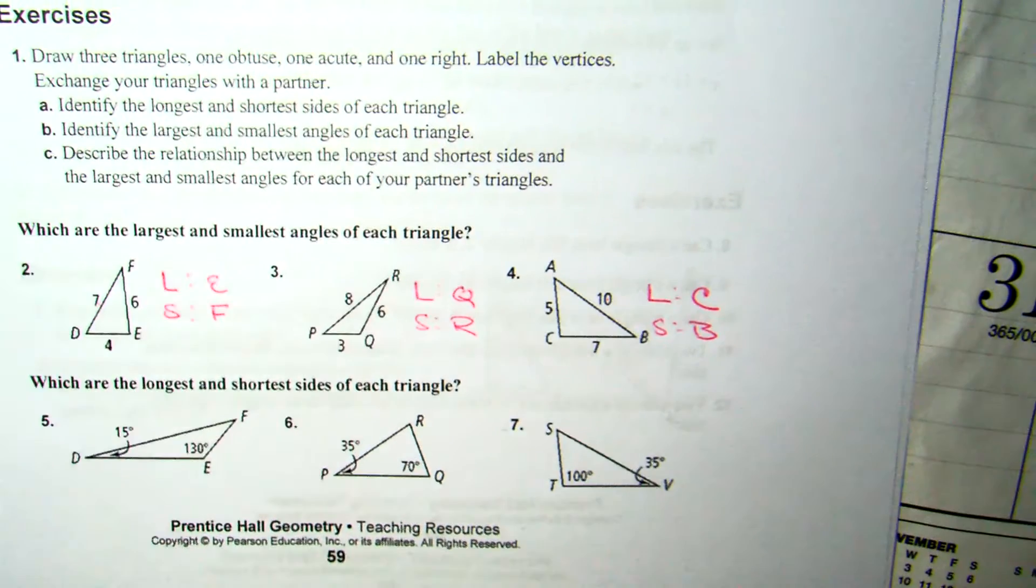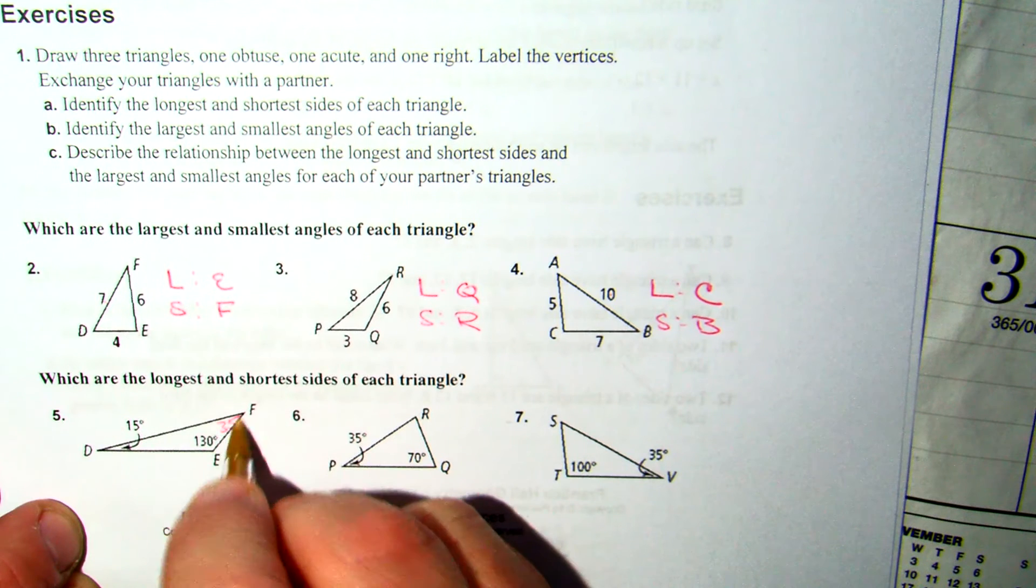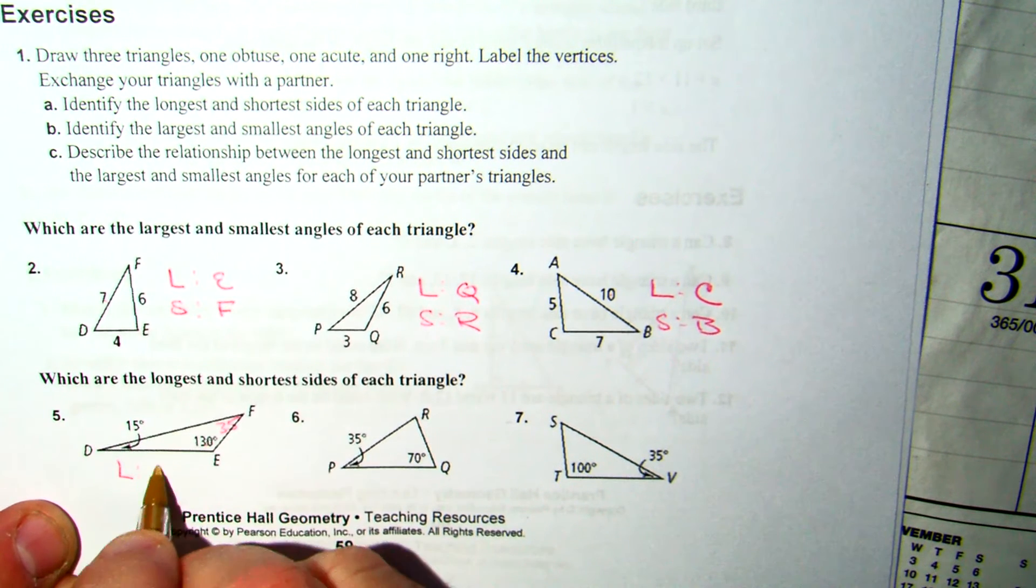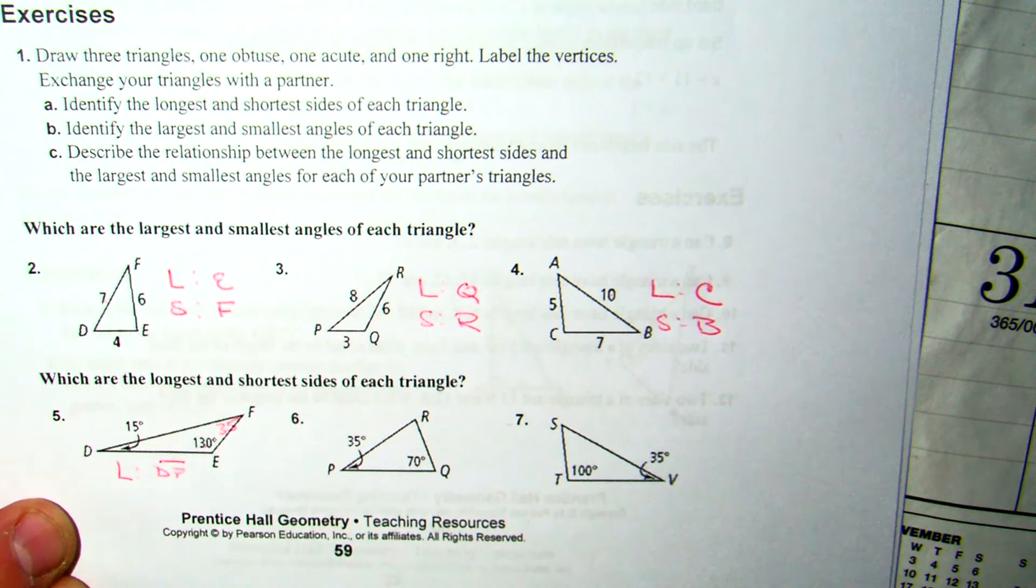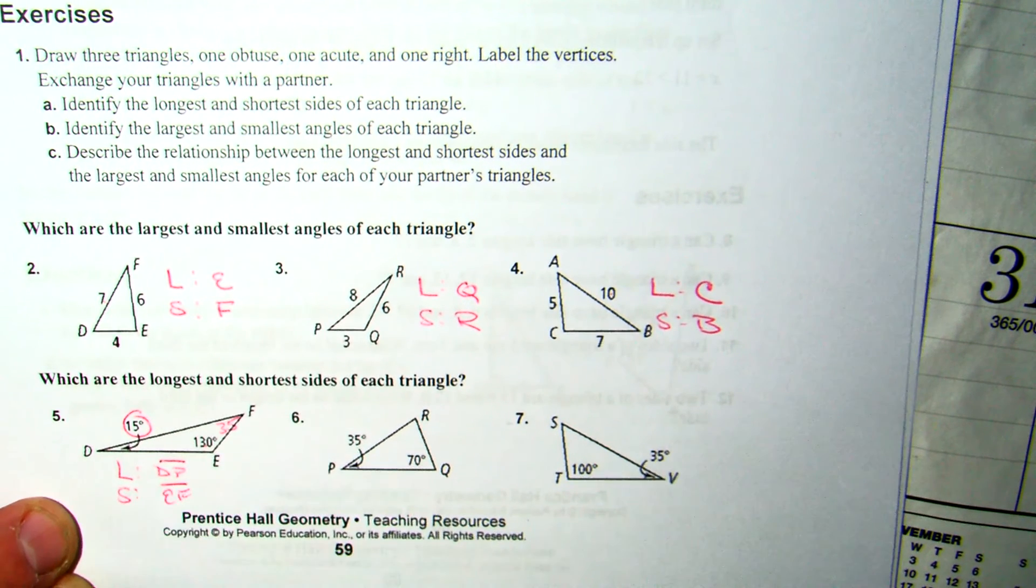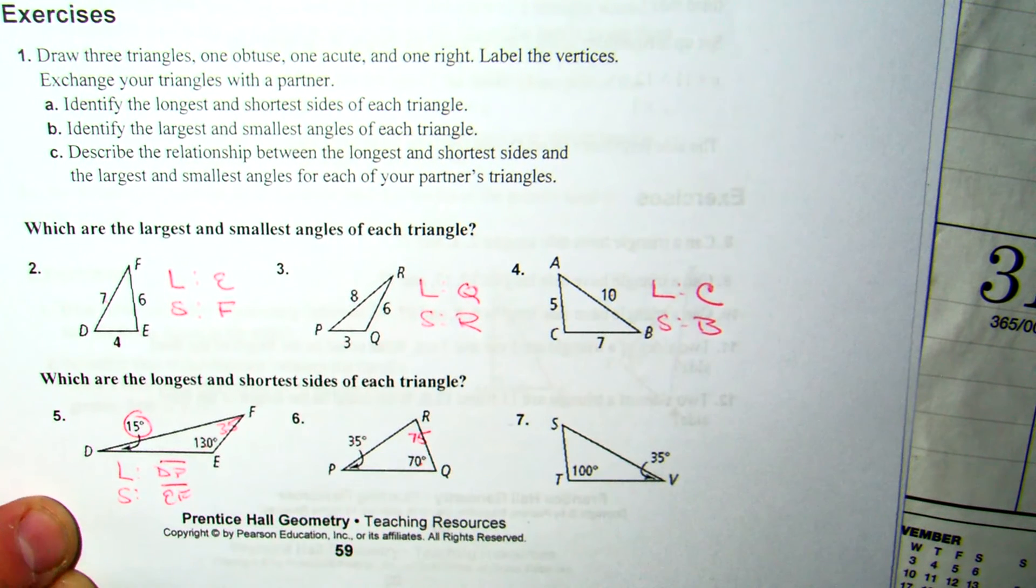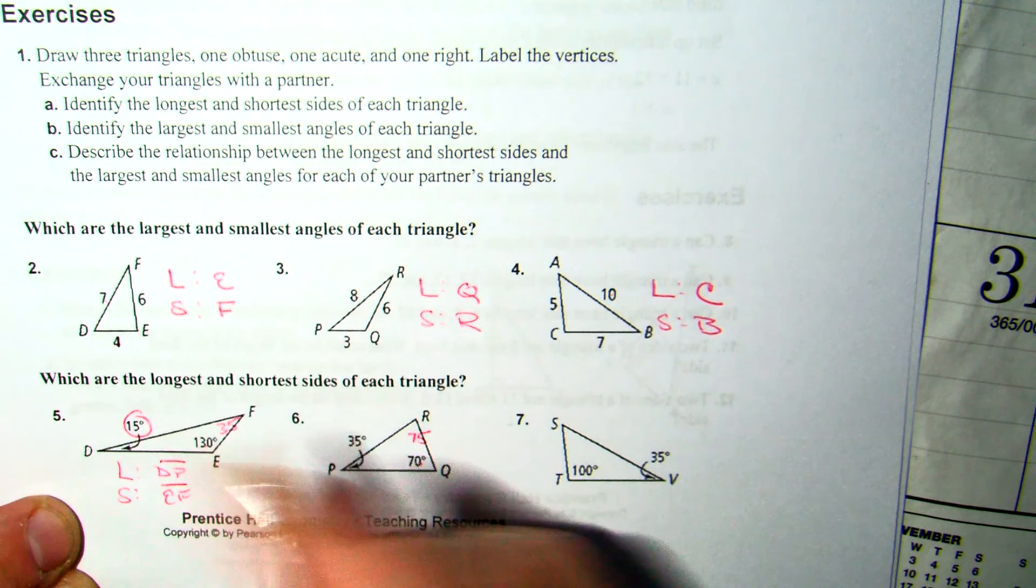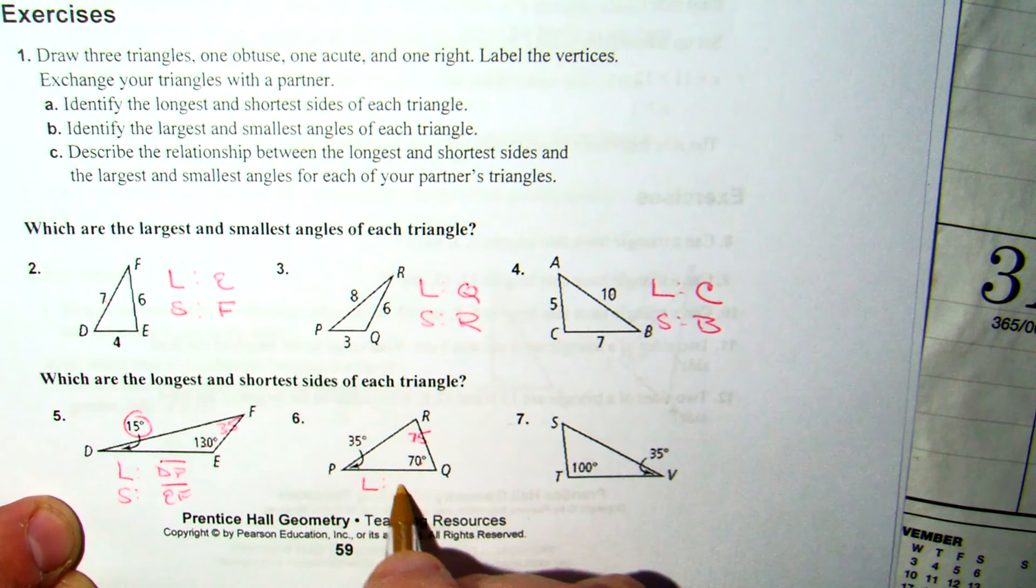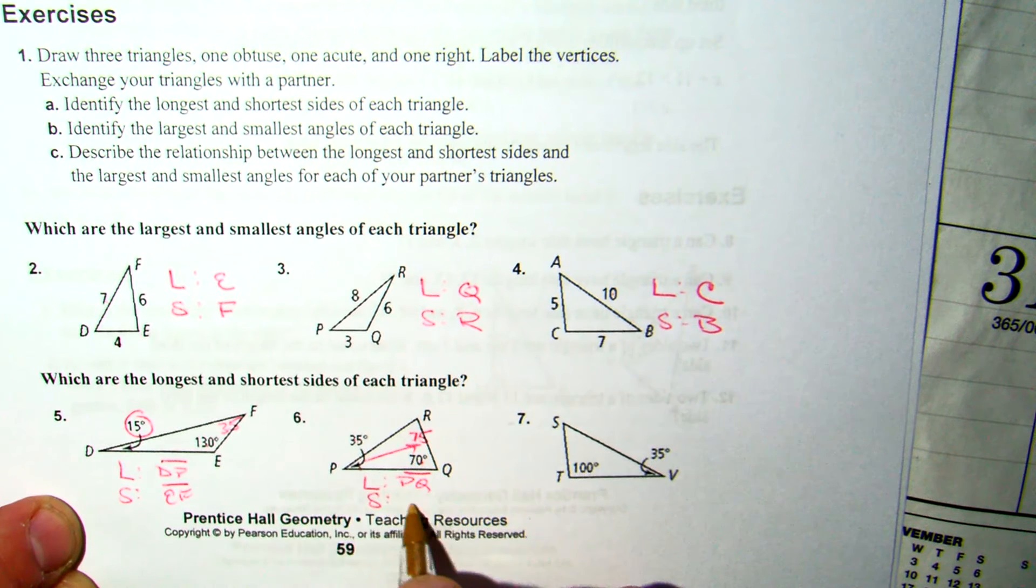And the reverse works as well. We come down here. 130 and 15 is 145. Subtract from 180, we'll get 35. The longest side would be opposite to 130, so that's DF. Shortest side, since there's a 15, would be EF. Coming over here, 35 and 70 is 105. Subtract from 180, we get 75. The longest would then be opposite to 75, so that would be PQ. And the shortest would be opposite to 35, so that would be QR.